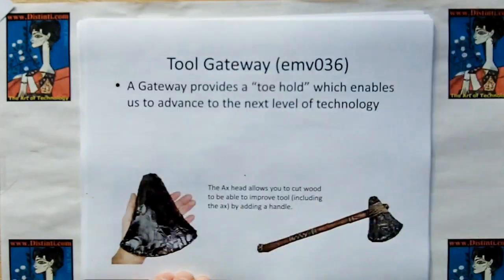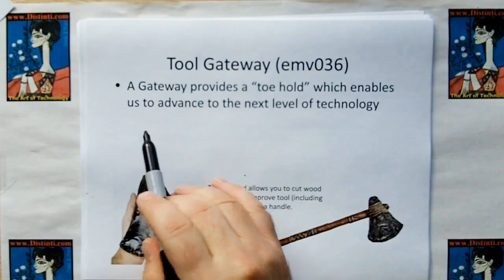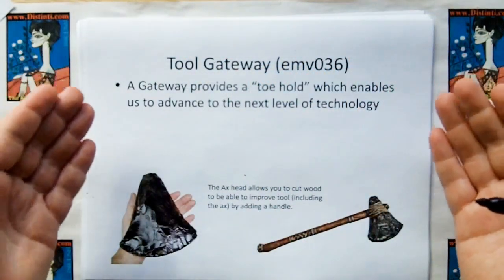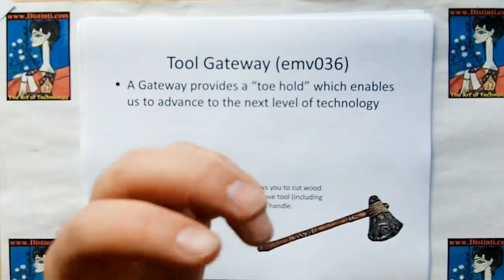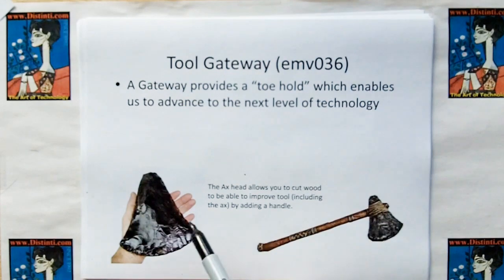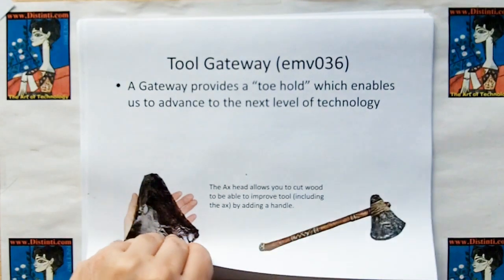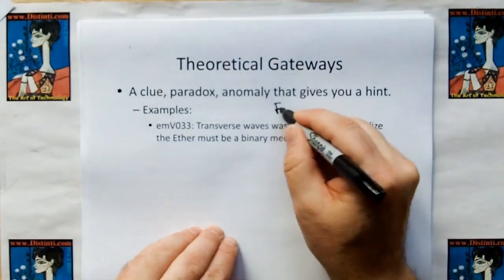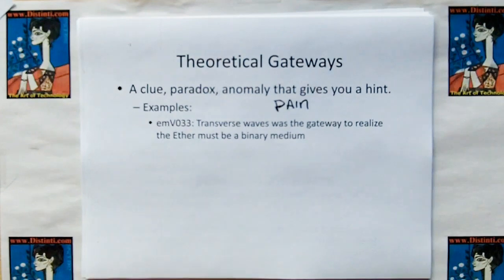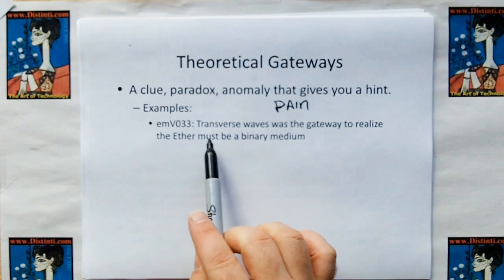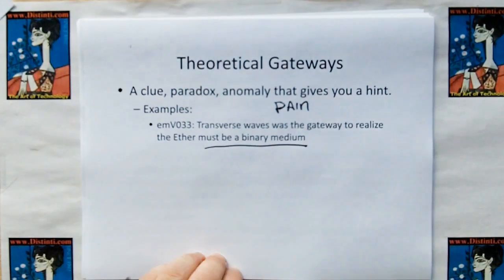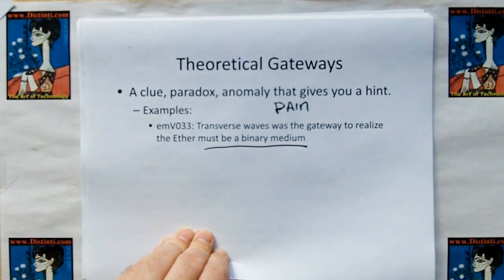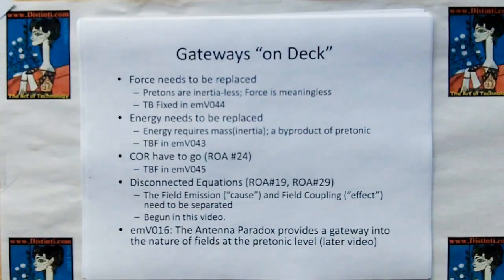And in the upcoming videos on the new math construct, I found 128 solutions out of 268 million possibilities. And that ended up reducing to two. Or, the third technique is you can find a gateway. Now, in video number 36, we introduced the tool gateway, where a gateway tool provides a toehold, which enables us to advance to the next level of technology. And the example is, if you had in a city an axe, then you can cut a branch and cut some string that now you can fashion a handle for the axe, making the tool better until eventually you get up to machine tools and space shuttles and all that stuff.